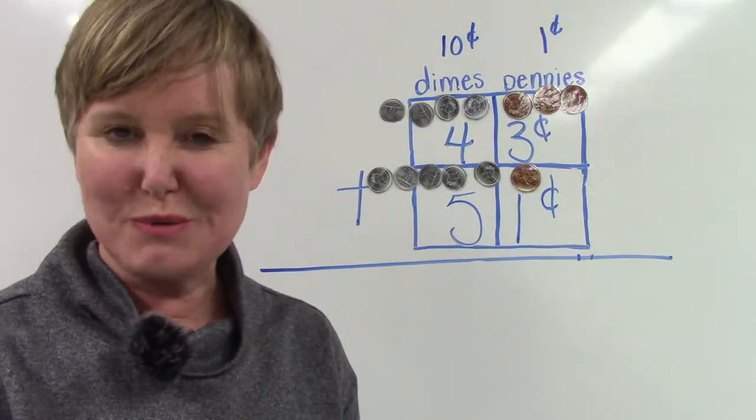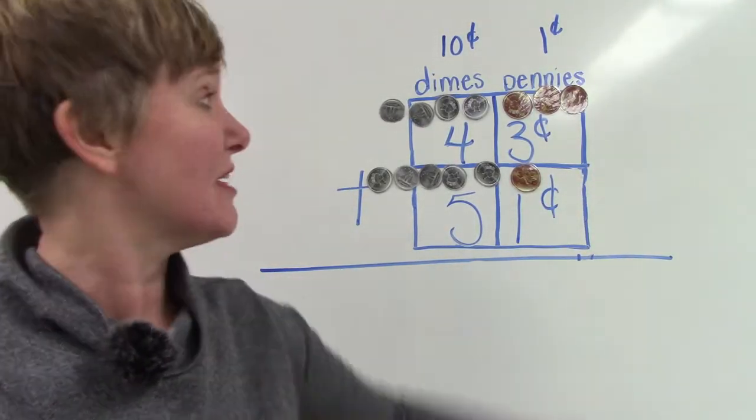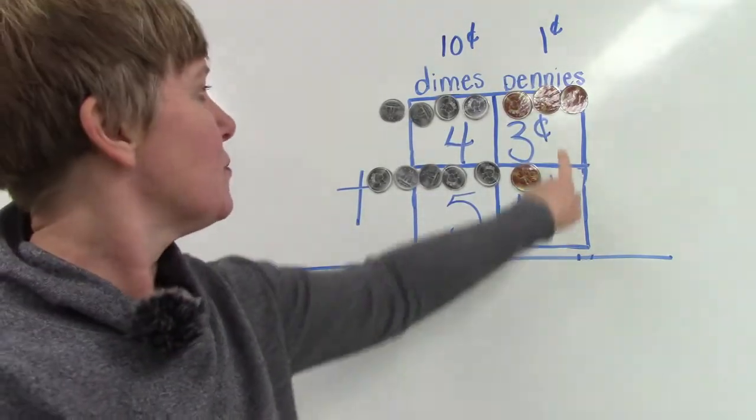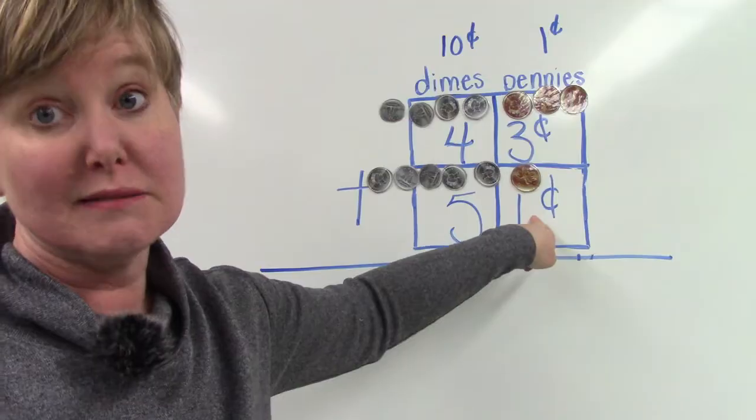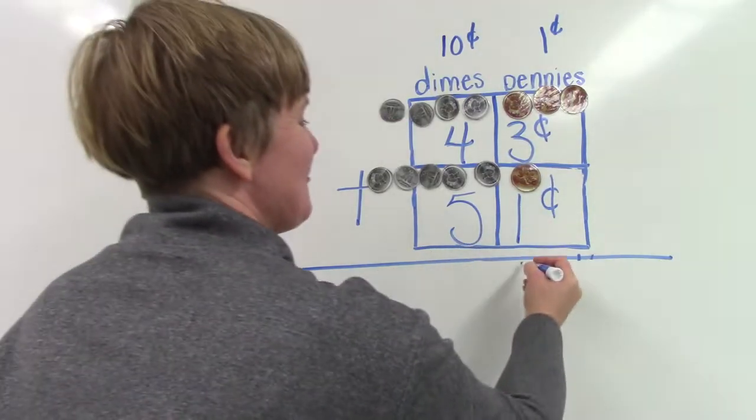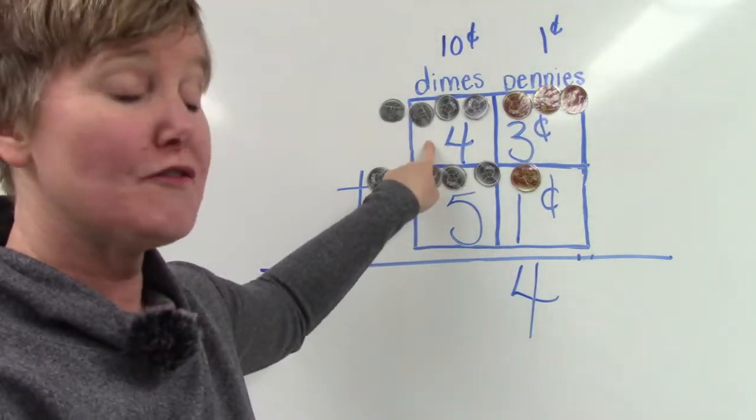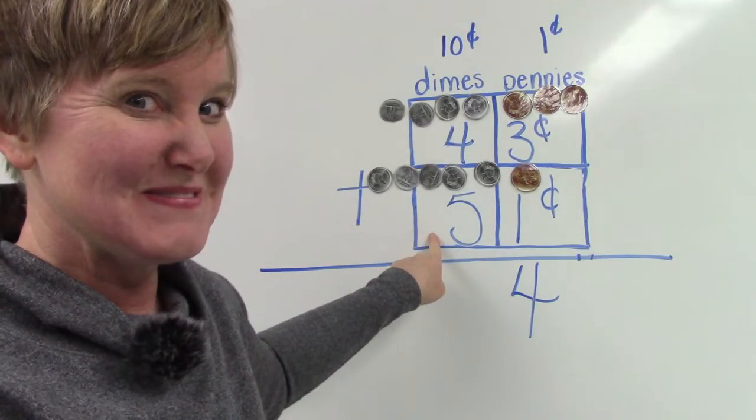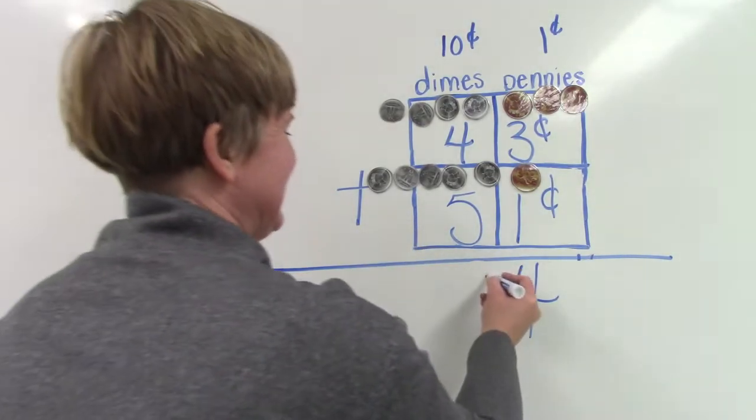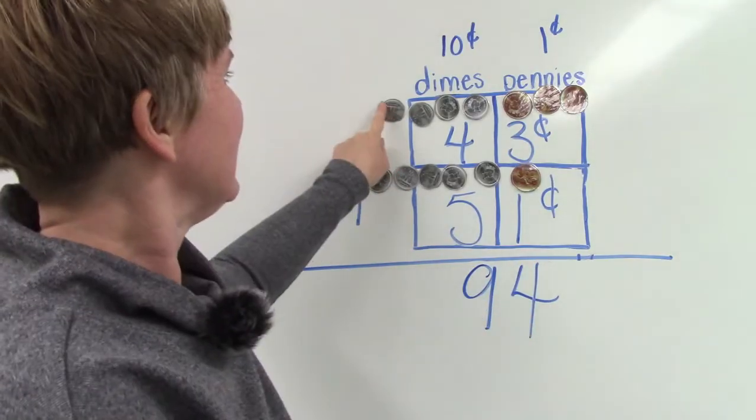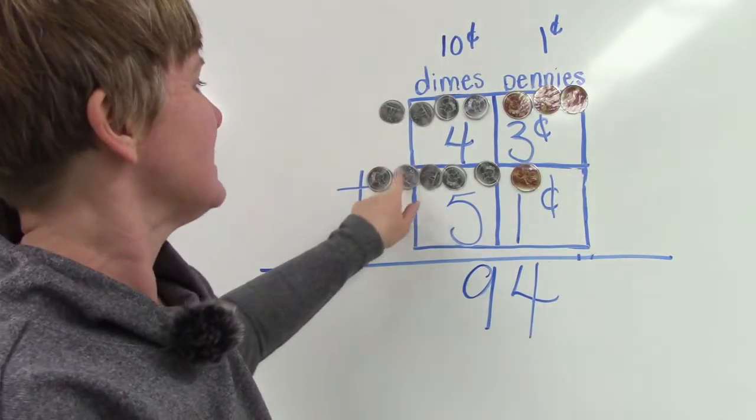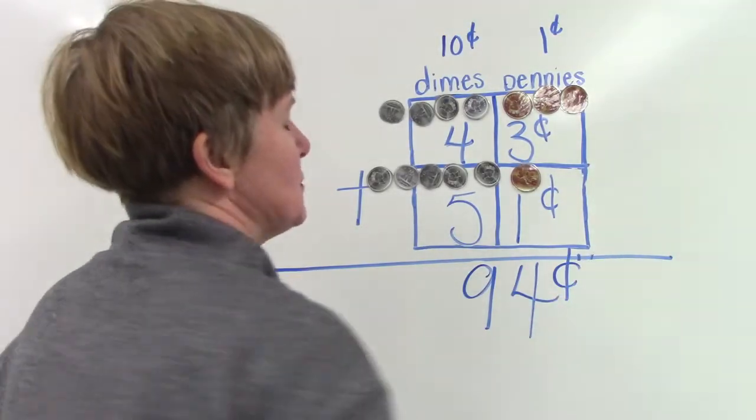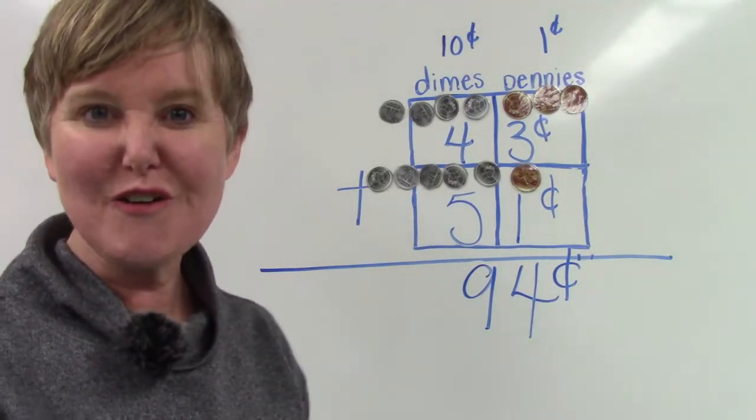When we add these two numbers together, we start with the ones place or the pennies column. Three pennies plus one penny. That's easy. Four. What about four dimes plus five dimes? Did you say nine? Well done. One, two, three, four, five, six, seven, eight, nine. 43 cents plus 51 cents is 94 cents.